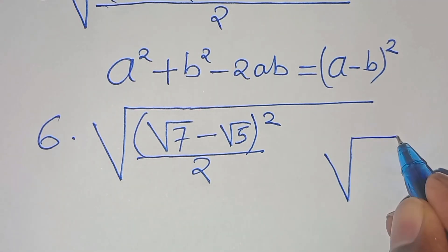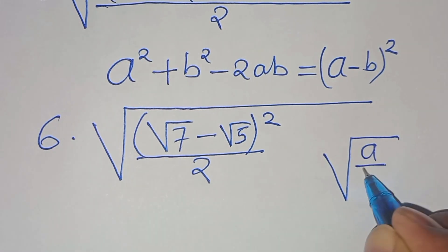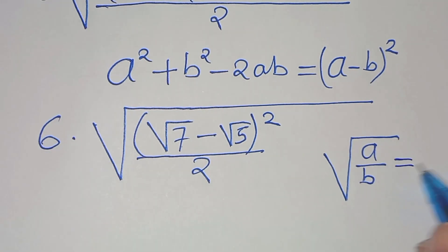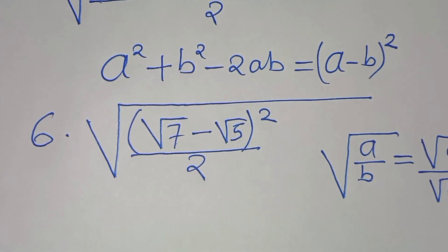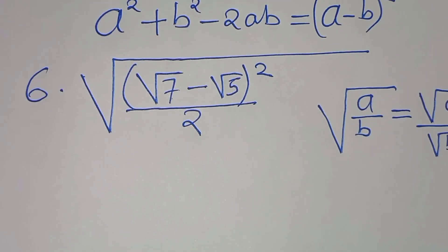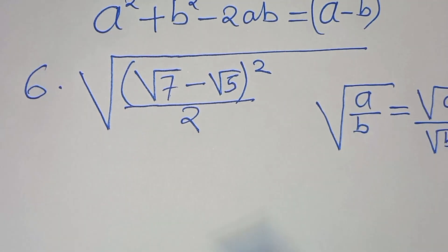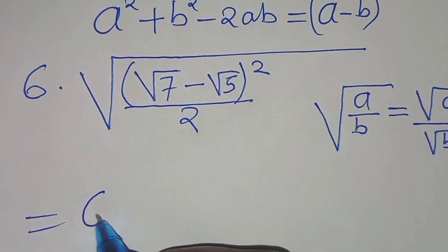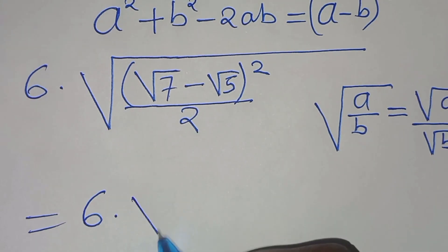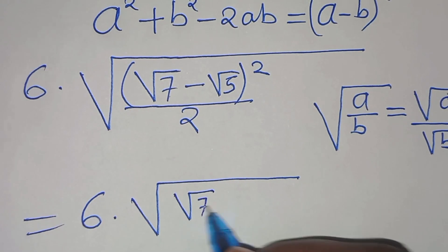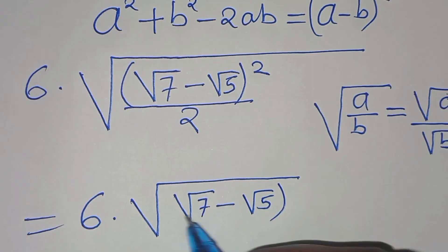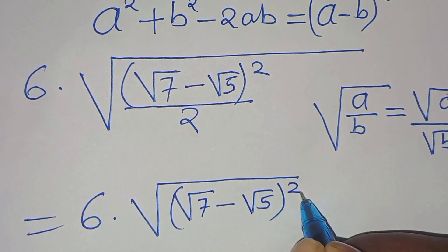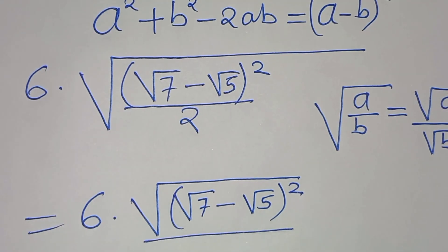Given that the square root of a divided by b can be expressed as square root of a divided by square root of b, let's apply this property so that we have 6 multiplied by (square root of 7 minus square root of 5) squared, divided by square root of 2.